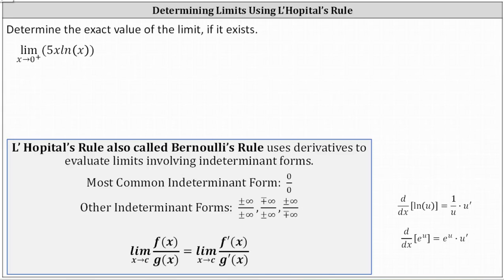Determine the exact value of the limit if it exists. We have the limit as x approaches zero from the right of 5x natural log x. Let's first analyze the limit. Notice as x approaches zero from the right, x approaches zero and natural log x approaches negative infinity. This indicates the limit is in the indeterminate form of zero times negative infinity.